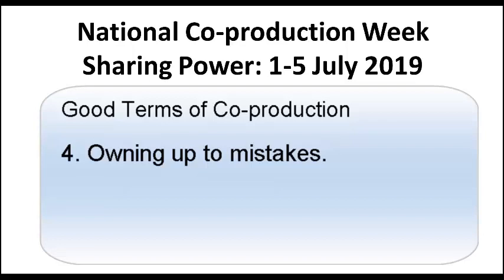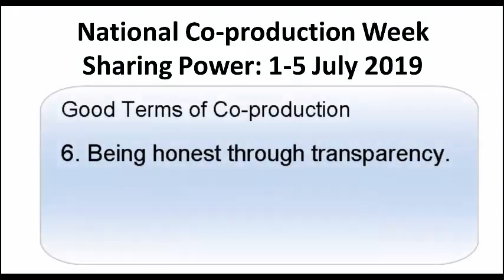Number four is owning up to mistakes. If a particular policy doesn't work, you own up and ask: can we co-produce together to improve this? It's not easy — no one wants to admit they've done something wrong because there'll be repercussions. But the NHS needs to be transparent, and one of the ways to demonstrate that transparency is to own up when something is a mistake. Number six — being honest through transparency — follows directly from this.